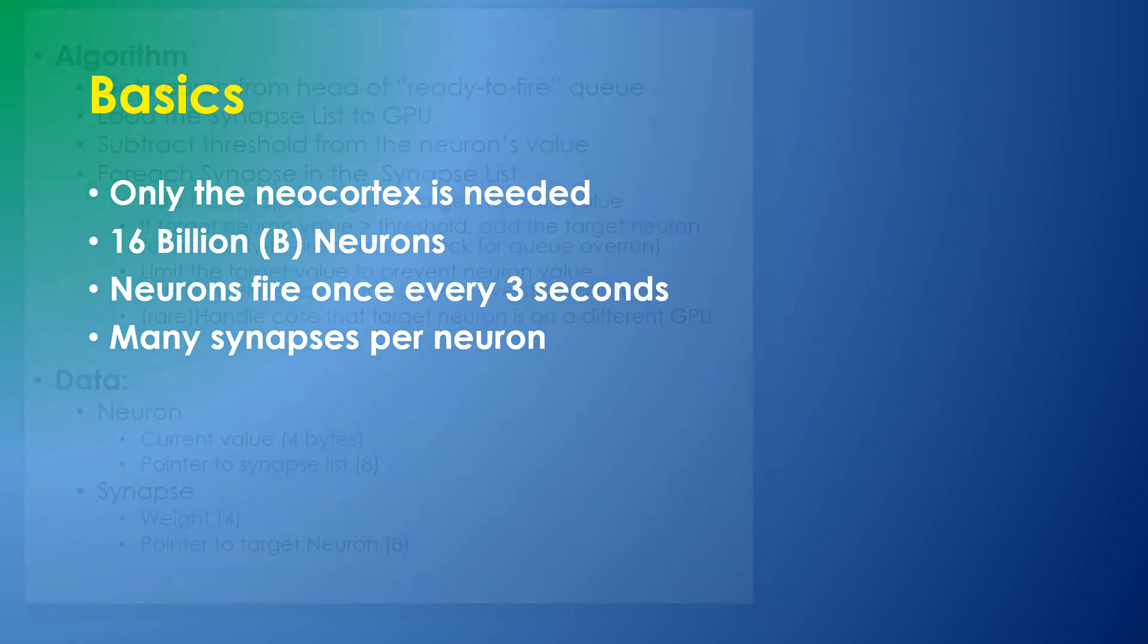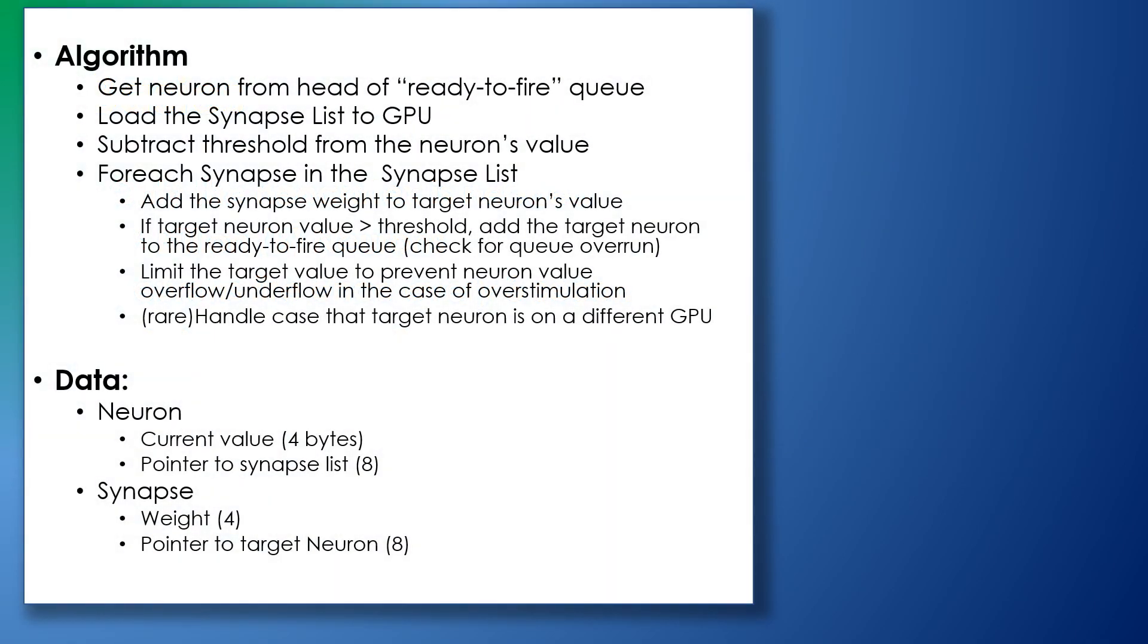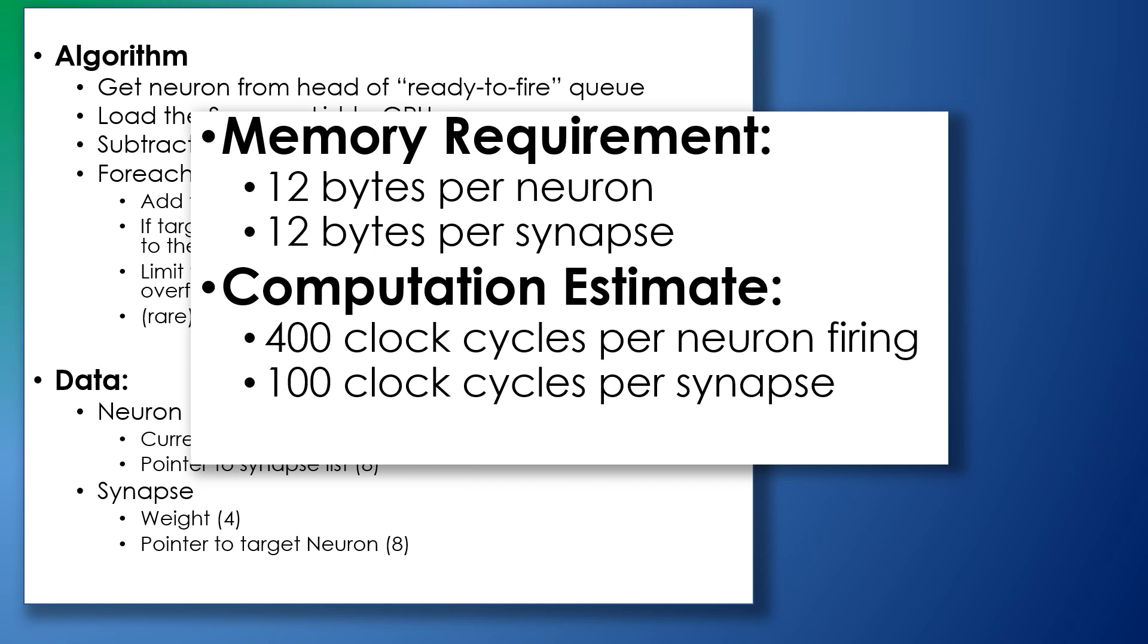Here is an algorithm which will perform the synapse calculation when a neuron fires. For details, pause the video and take a look. The key results are that the memory requirement is 12 bytes per neuron plus 12 bytes per synapse, and the estimated computational requirement is about 100 clock cycles per synapse.